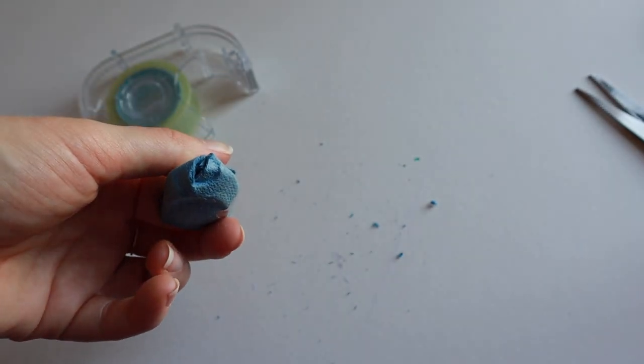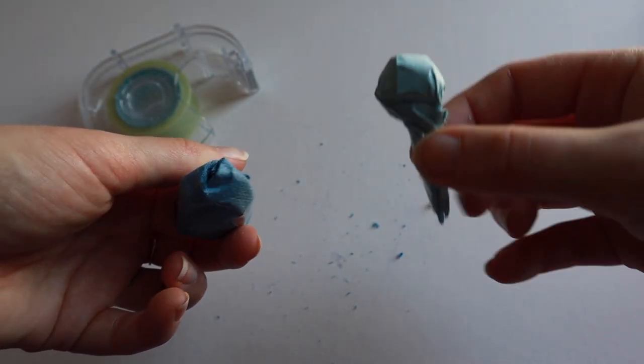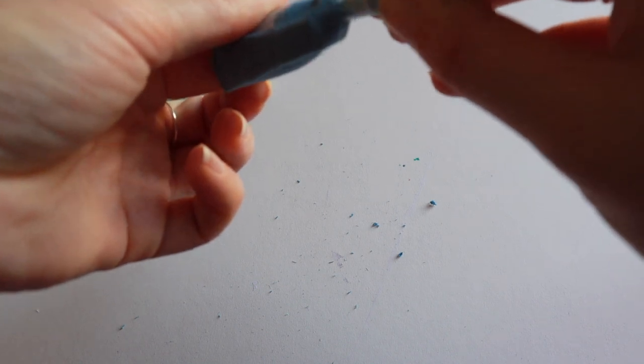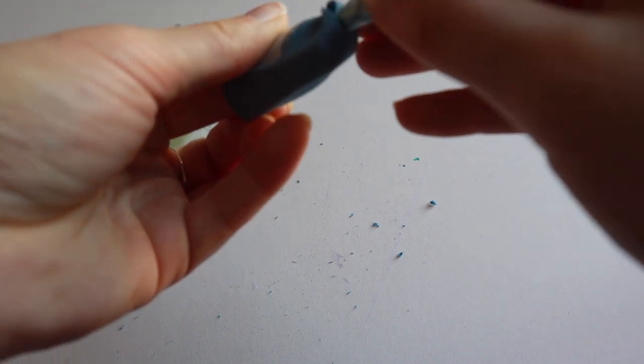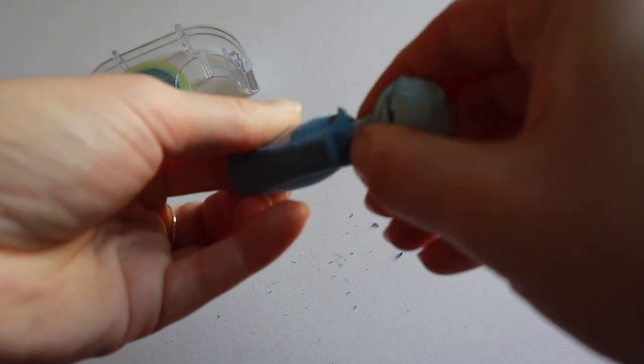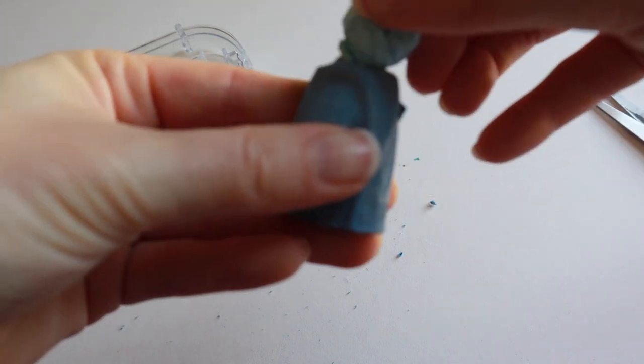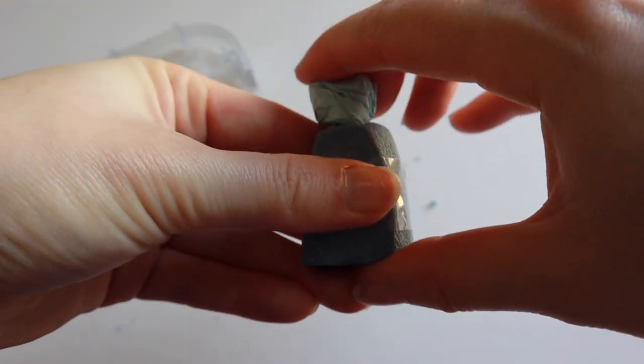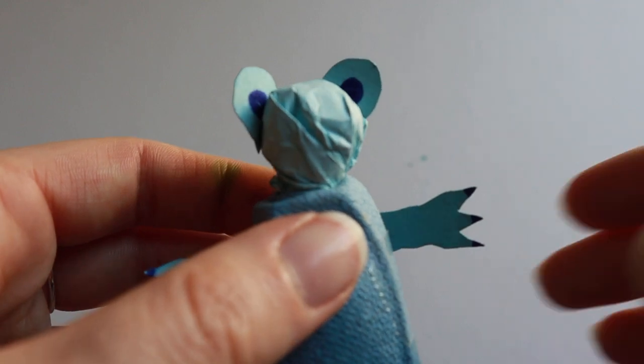Make a head in the same way as we did before, just a little smaller. Push the stalk gently into the hole. Make arms, feet, and ears just as you did before.